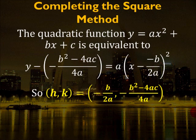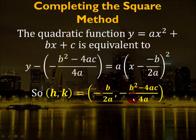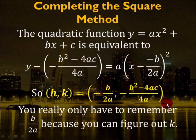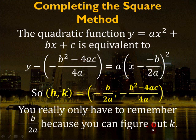The completing the square method shows that y = ax² + bx + c is equivalent to y - ((-b² - 4ac) / 4a) = a(x - (-b/2a))². The vertex (h, k) has h = -b/(2a) and k = (-b² - 4ac)/(4a). From a practical standpoint, you only need to remember h = -b/(2a). To find k, just plug the h value into your function and solve — you don't need to memorize the k formula.